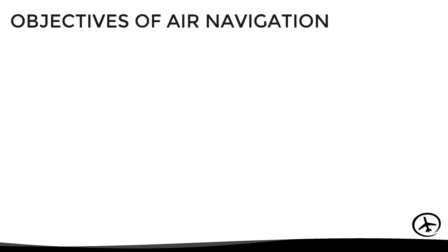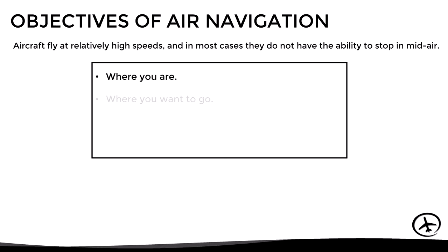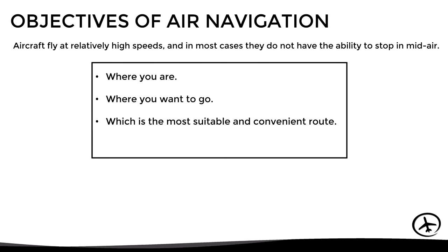Air navigation differs from other types of navigation in that aircraft fly at relatively high speeds, and in most cases they do not have the ability to stop in mid-air. With this being said, the basic objectives of air navigation are to determine where you are, where you want to go, which is the most suitable and convenient route between those two points, and how much time and fuel it will take to get there.